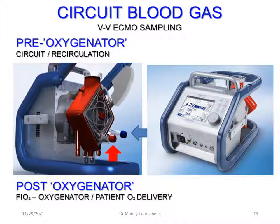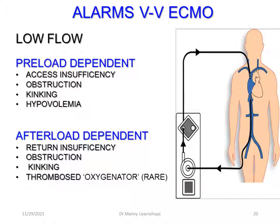Circuit blood gases for VV ECMO include pre-oxygenator sampling, which can indicate circuit recirculation, and post-oxygenator sampling reflecting FiO2 and oxygen delivery. All alarms should always be set correctly within the appropriate parameter ranges. Low-flow alarms are preload-dependent and can indicate access insufficiency, obstruction, kinking, and hypovolemia. After-low alarms can indicate return efficiency issues, obstruction, kinking, or a thrombosed oxygenator, which is rare.